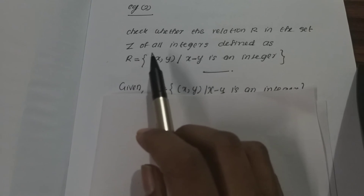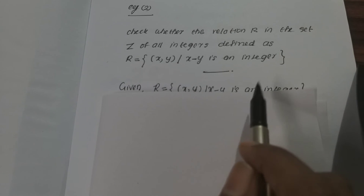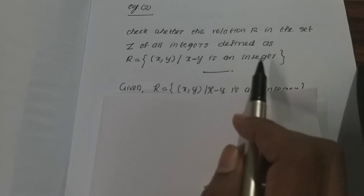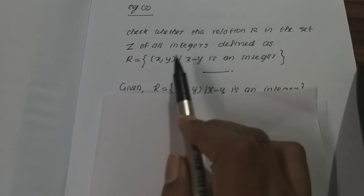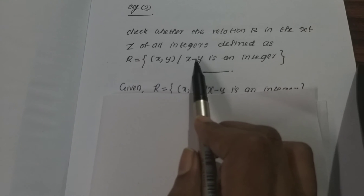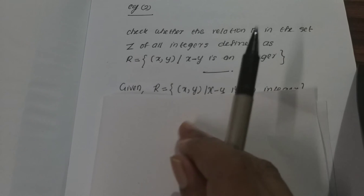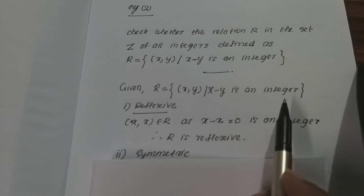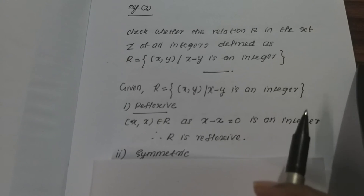Example 2: Check whether the relation R in the set Z — the set of all integers, which includes negative integers, positive integers, and zero — defined as R = {(x, y) such that x minus y is an integer} is an equivalence relation.